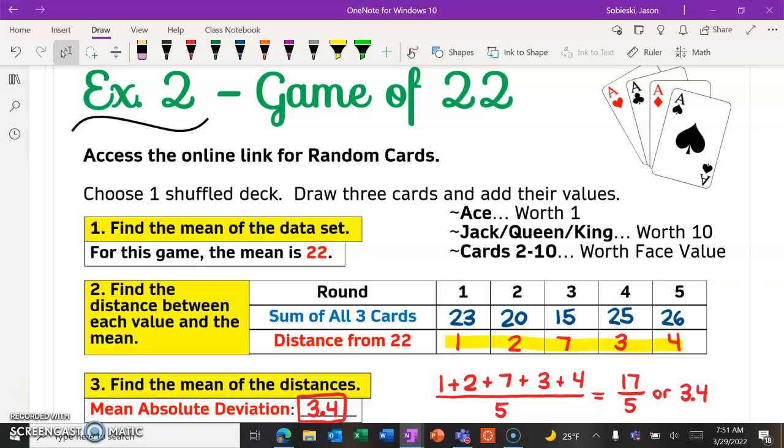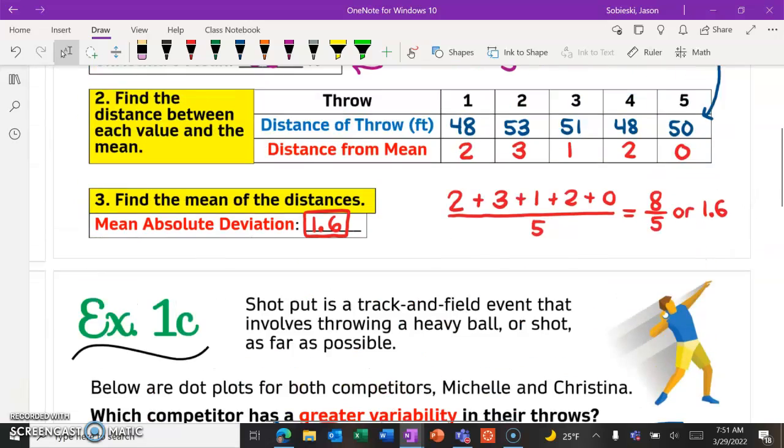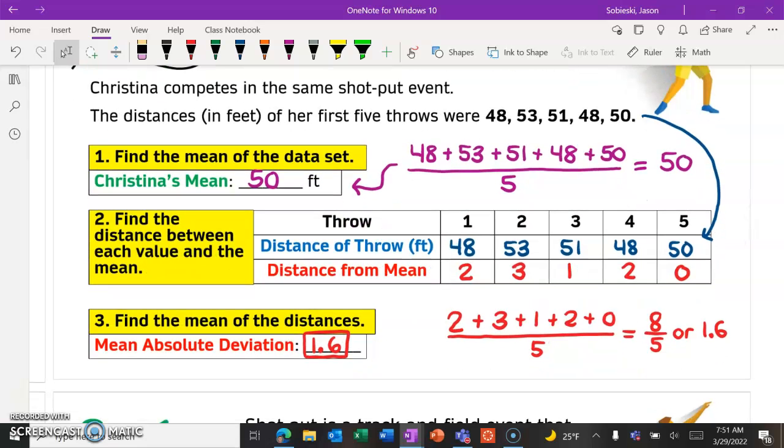So hopefully this video helped. Again, your three steps. First thing you are finding the mean of the data set. Once you have that mean, you are figuring out how far away each number in the data set is from that mean. Find the distances, and then you're taking the average of the distances, and you'll be good to go. So thank you for watching, and I hope this helped.